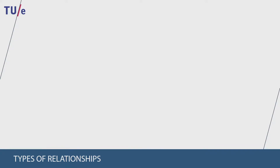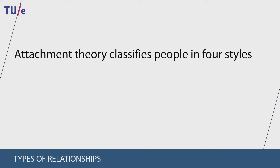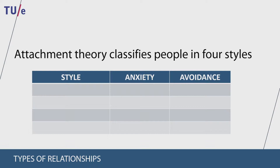According to attachment theory, people can be classified into four different attachment styles. These styles vary on two different dimensions: anxiety and avoidance. The anxiety dimension refers to attitudes towards the self, and the avoidance dimension refers to attitudes towards another person. The first attachment style is called secure attachment. People with this style are low on both anxiety and avoidance — they trust their partners, share their feelings, provide and receive support and comfort, and enjoy their relationships.